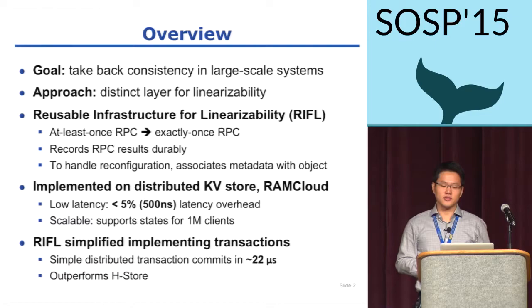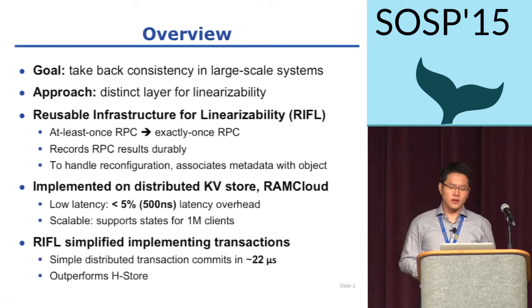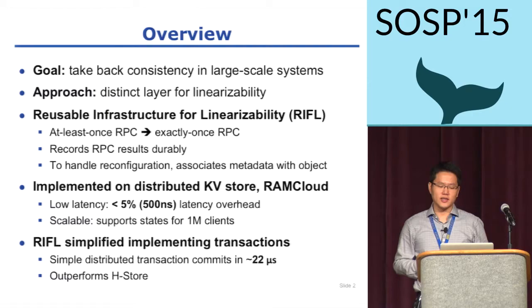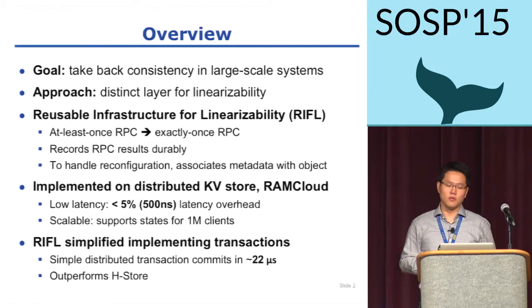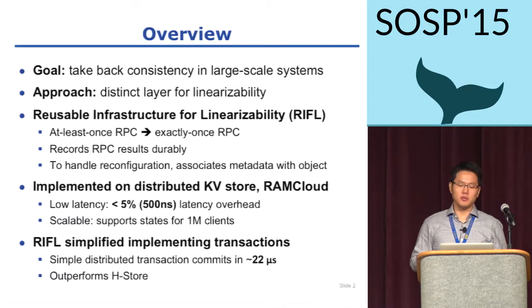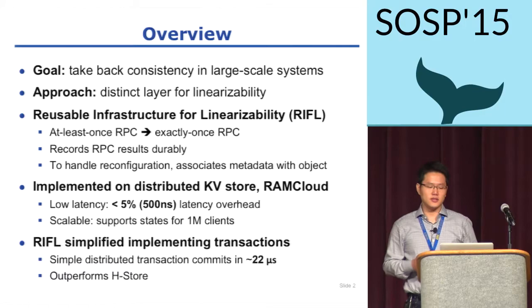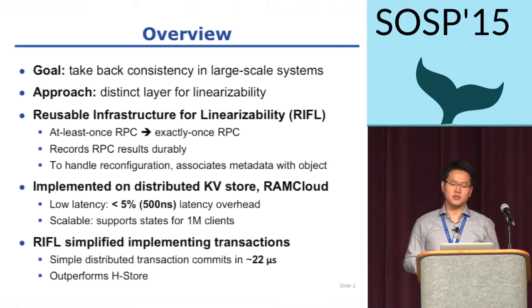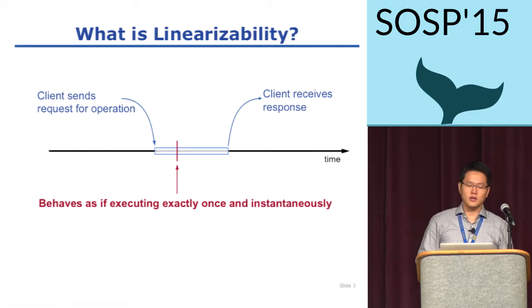RIFO is tolerant to cluster reconfigurations, such as data migrations and crash recovery. RIFO was implemented in RAM Cloud, which is a very fast distributed key-value store, and it only added 500 nanoseconds of latency, which is less than 5% of the existing write operation of RAM Cloud. We also verified the reusability of RIFO by implementing transactions on RAM Cloud. A distributed transaction spanning three servers commits in only 22 microseconds, and the TPCC benchmark showed it outperforms H-Store.